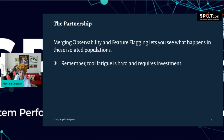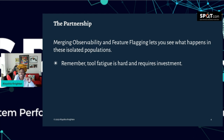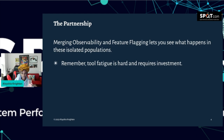There's a partnership — I say partnership because to me it's more of a serious relationship on both sides. Merging observability and feature flagging lets you see what happens in those isolated populations. Tool fatigue is real and requires a lot of investment, so using observability and feature flagging requires a level of commitment. With observability, you get insights on your users and systems in real time. With feature flagging, you get to show a particular thing to a group of users at an interval of your choosing.